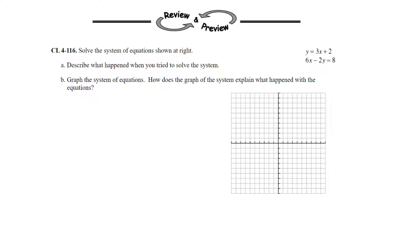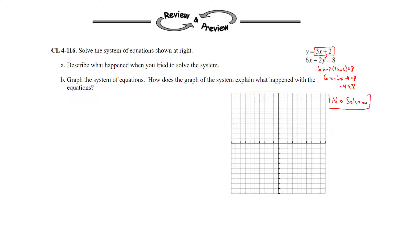Let's go ahead and solve this by substitution. We have y equals 3x plus 2, so we'll plug that in for y. That gives us 6x minus 2 times the quantity 3x plus 2 is equal to 8. That gives us 6x minus 6x minus 4 equals 8, and we get negative 4 equals 8, which is not true. So this system has no values of x and y that satisfy both equations.